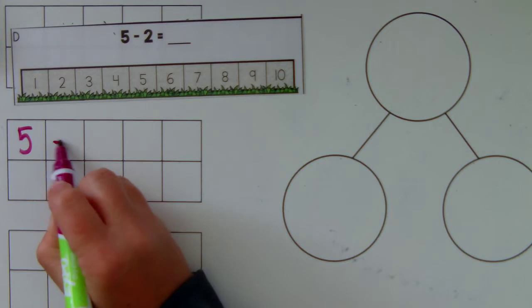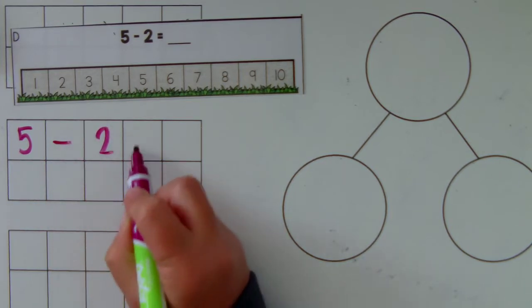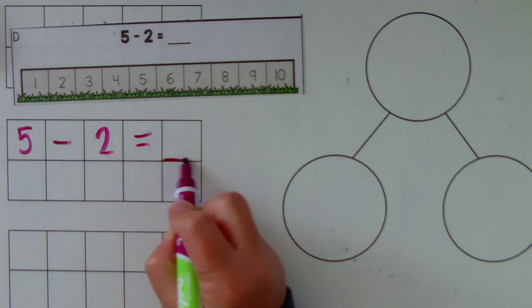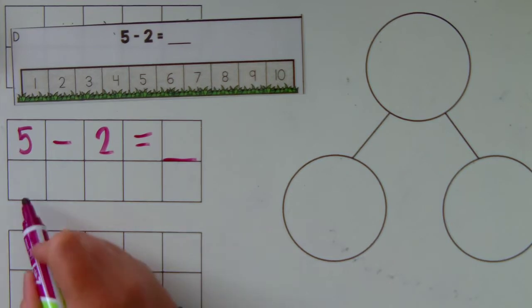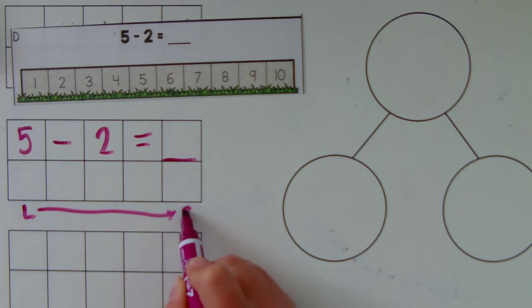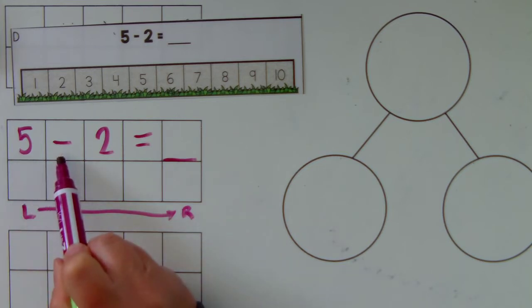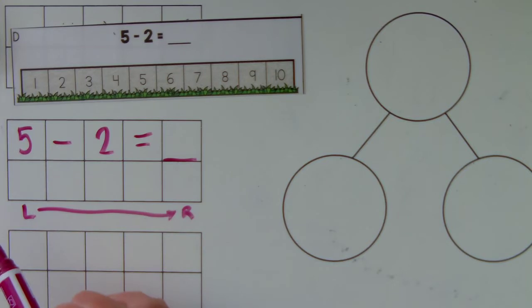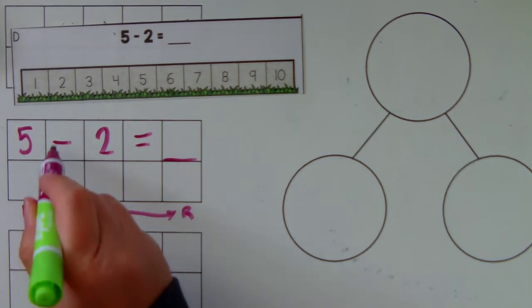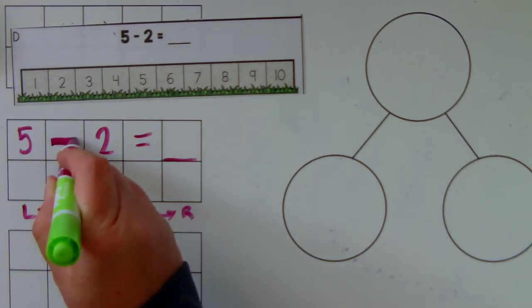5 take away 2 equals blank. Remember that we read from left to right. So when we're reading our equations, we have to identify the symbols. And here we have a minus symbol.